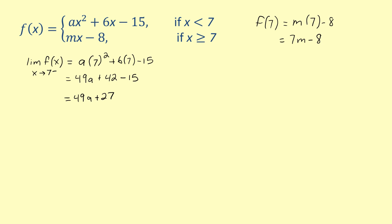We obtain our first equation by setting the value of the function at 7, which is 7m minus 8, equal to the left limit we just found, 49a plus 27. Now we solve for m. Adding 8 to both sides gives 7m equals 49a plus 35. Dividing both sides by 7 to isolate m, we find that m equals 7a plus 5.